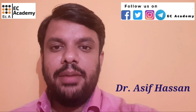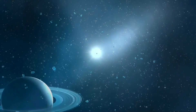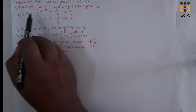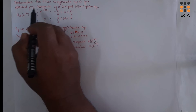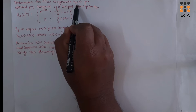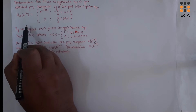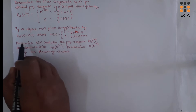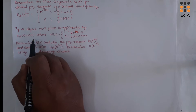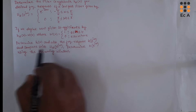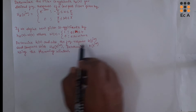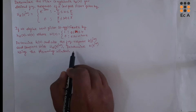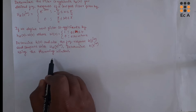Hello friends, welcome to ESEA Academy. In this lecture, let us understand the problem on FIR filter. Here we need to determine the filter coefficient HD of N for the desired frequency response of a low pass filter. If we define new filter coefficient HD of N into omega of N, we need to determine H of N and compare H of e^jω with HD of e^jω, using the Hamming window.